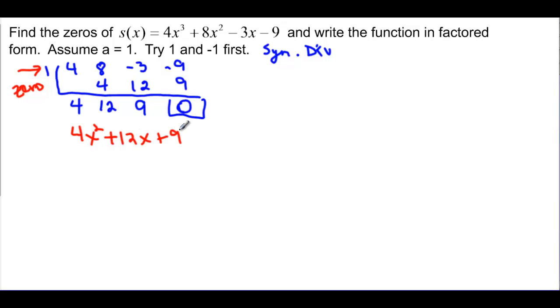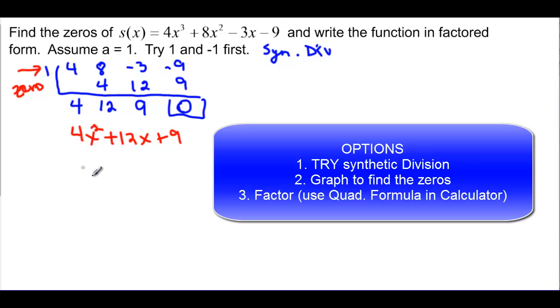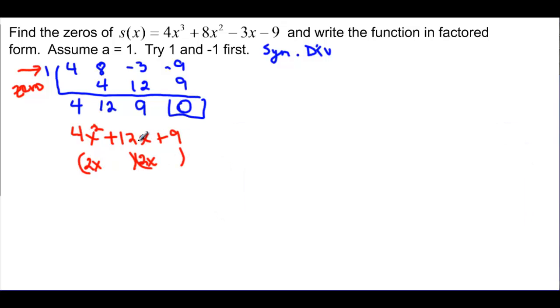And we could do a couple of different things with this one. We could just try to factor it like we see it. Or we could try synthetic division again. But actually come find out that we have rational zeros. So let's just factor it from this point. It's a quadratic. We could use our calculator quadratic formula if we really wanted to. But this one's not too bad. 2x and 2x. Factors of 9 that add up to with those 2x's to 12, well that looks like 3 and 3. Because then I'd have 6 plus 6. And then that tells me that my 0 is x is equal to negative 3 over 2.